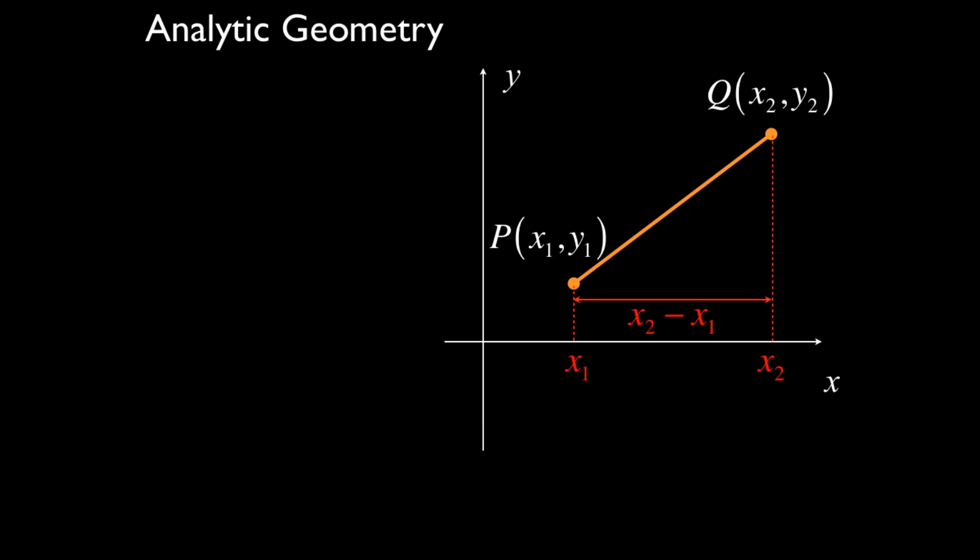We now do the same thing for the y-coordinate, recognizing that point P has a y-coordinate of y1, and point Q has a y-coordinate of y2. And the vertical distance between those two points is y2 subtract y1. And now we become very interested in this right triangle that I've marked in yellow.